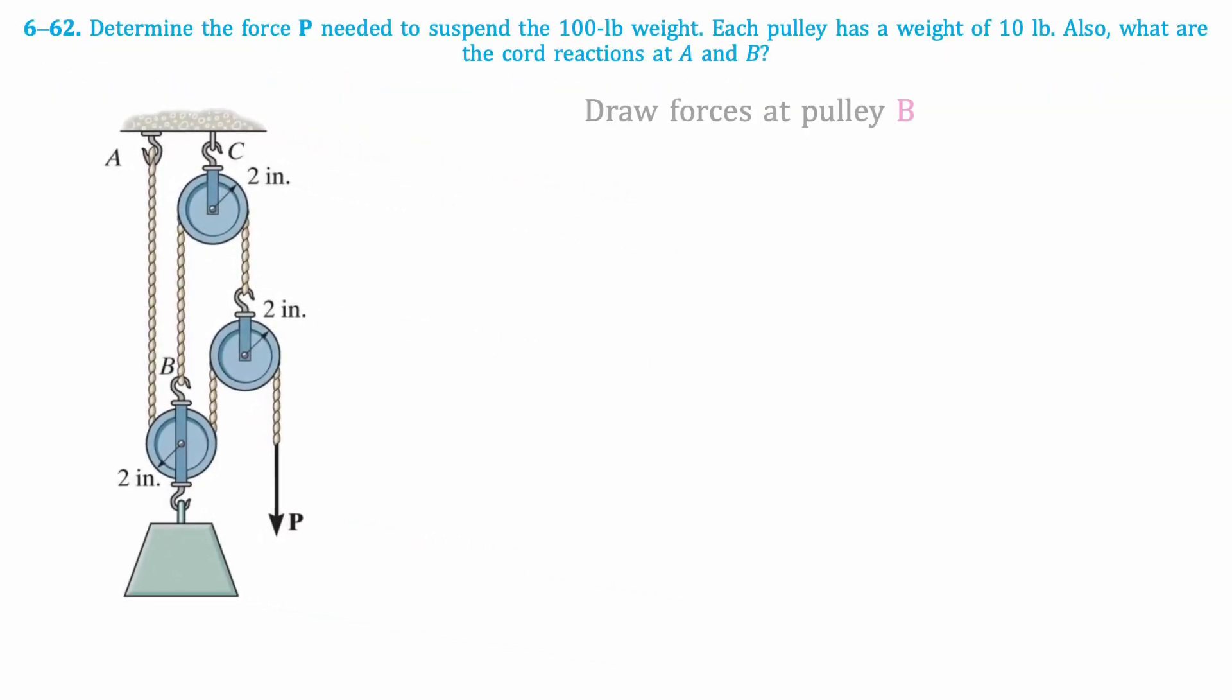First, we'll draw the forces at pulley B. To do so, we need to understand the structure of this problem. Chord P travels through the system as shown by the green line. Chord T travels through the system as shown by the orange line. With this understanding, we can draw the forces at pulley B.